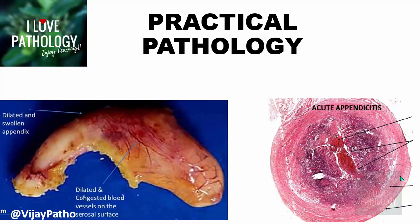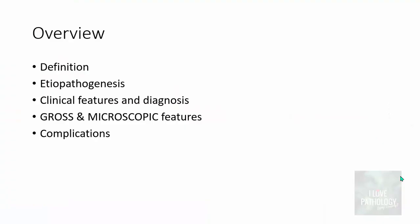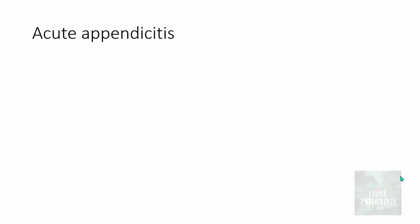Hi everyone, welcome to the practical pathology series by I Love Pathology. By looking at the images you would know that the topic we will be discussing today is acute appendicitis. In the next 10 minutes we will understand the definition of appendicitis, the etiopathogenesis, the various clinical features and diagnosis, and most importantly the gross and microscopic features of appendicitis, concluding with its complications.